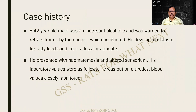The case for the day: a 42-year-old male who was an incessant alcoholic and was advised to refrain from it by the doctor, which as usual he ignored. He developed distaste for fatty foods and later a loss of appetite. He presented with hematemesis and altered sensorium. His laboratory values are as shown, and he was put on diuretics with blood values closely monitored. Are you able to make a diagnosis?